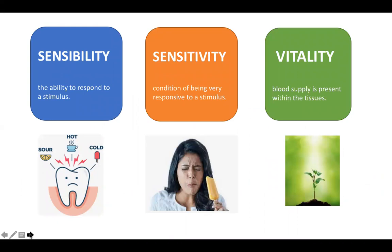Let us understand the terms sensibility, sensitivity and vitality. The ability of a tissue to respond to a stimulus is referred to as sensibility, because of the presence of nerve fibers within that tissue. The tooth can respond to heat, cold and pain because of the presence of A-delta nerve fibers and C fibers within the pulpal tissue. An exaggerated response to a stimulus is referred to as sensitivity, and the presence of a blood supply within the tissue refers to vitality.